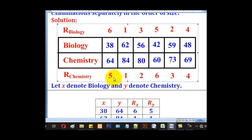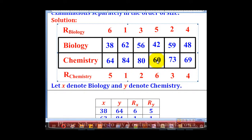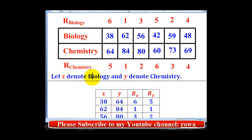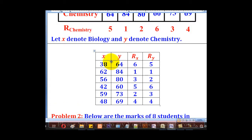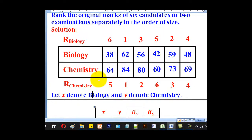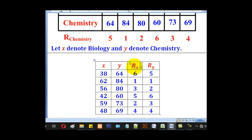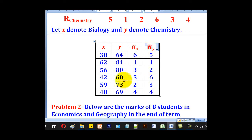For chemistry, 84 is the largest so it will take rank 1, followed by 80 which is rank 2, followed by 73 which is rank 3, followed by 69 which is rank 4, followed by 64 which is rank 5, and lastly rank 6. So if X denotes marks of biology and Y denotes marks of chemistry, we can draw our table with X for biology marks, Y for chemistry marks, RX for rank of biology, and RY for rank of chemistry.